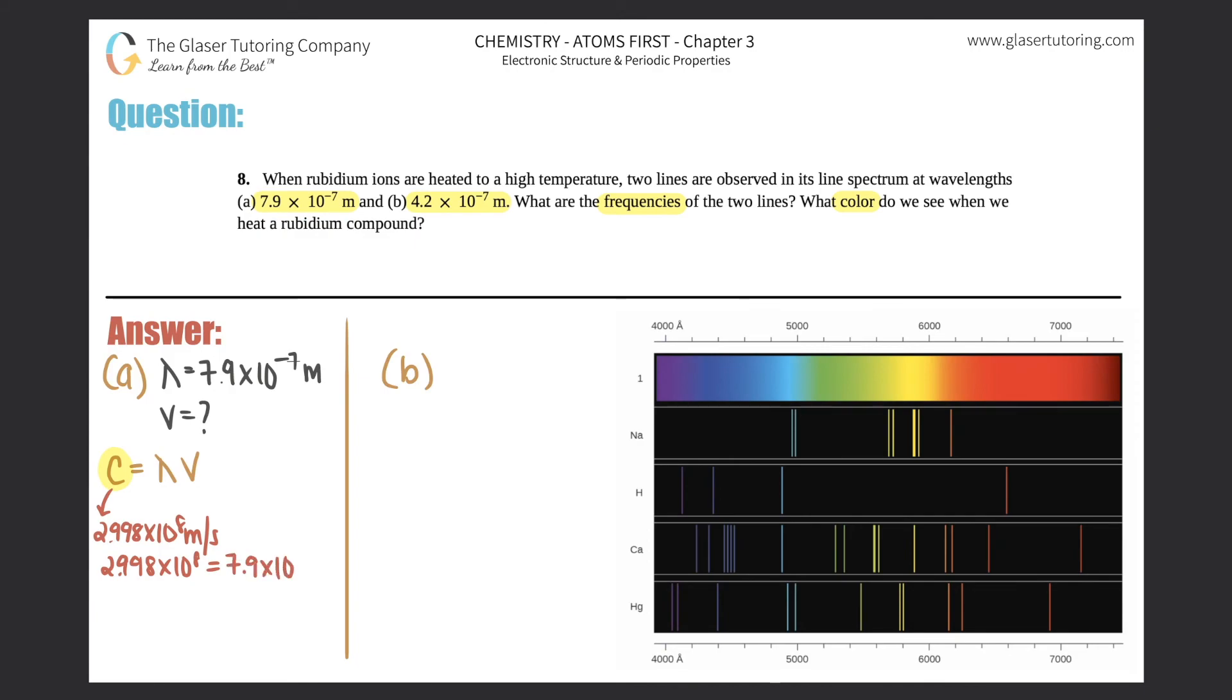Divide by 7.9 × 10^-7 on both sides, and that will give you your frequency. So this cancels out. Now calculator time: 2.998 × 10^8 divided by 7.9 × 10^-7.